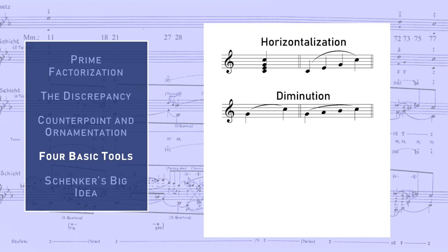The second tool is diminution, which means to take a melodic span that would otherwise be a leap, and to fill it in stepwise. You can imagine, as an example, the spans opened up by an arpeggiation, then being filled in by stepwise diminutions.